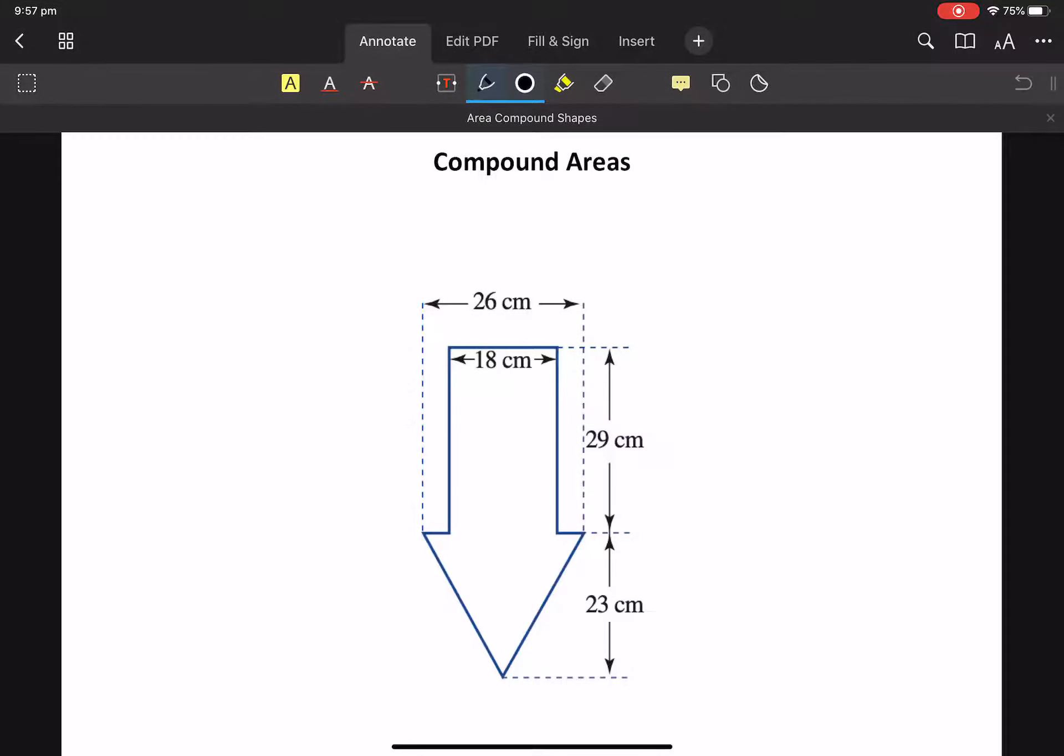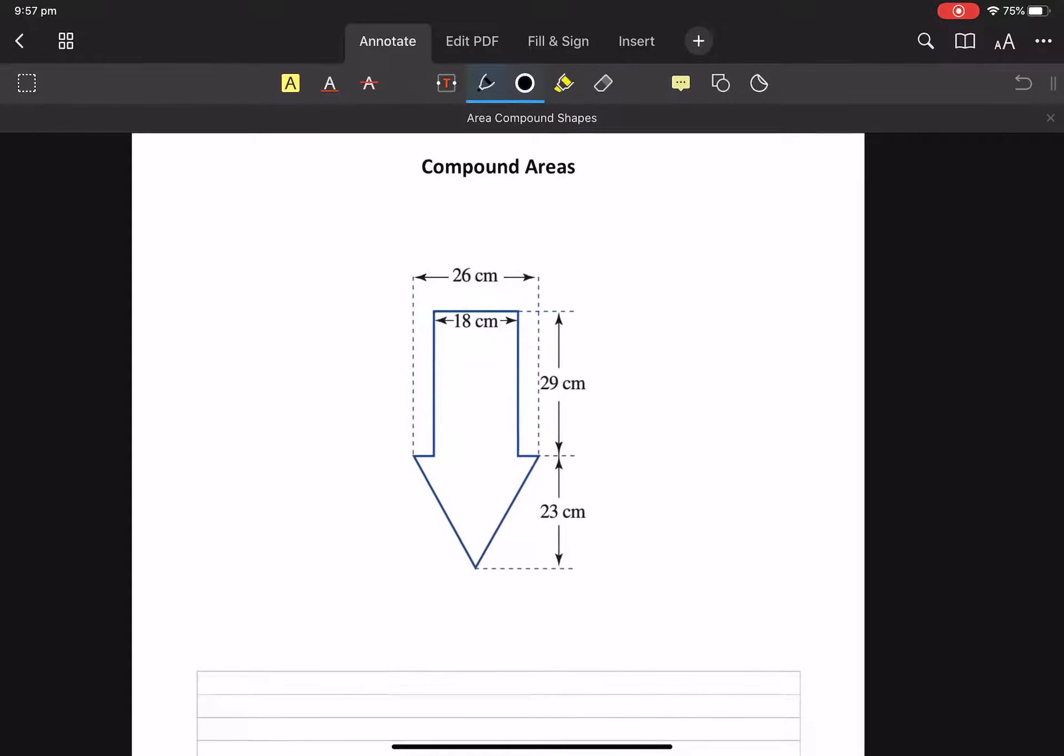Okay, areas of compound shapes. Compound means there's more than one shape involved.